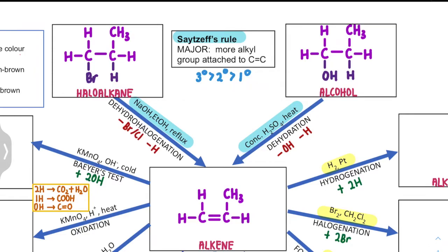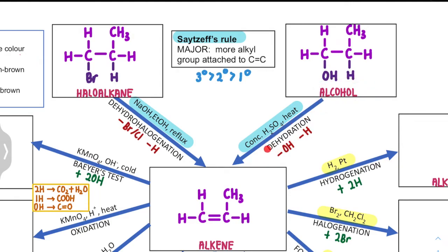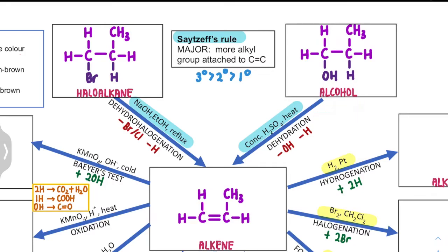For the preparation of Alkene, we have learned about 2 methods. One is dehydration of alcohol. Dehydration means we remove water — hydration refers to water, so dehydration means we remove water. For the removal of water, we're going to remove 1 OH and remove a hydrogen.